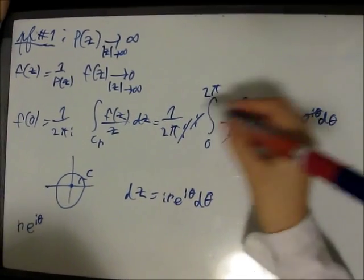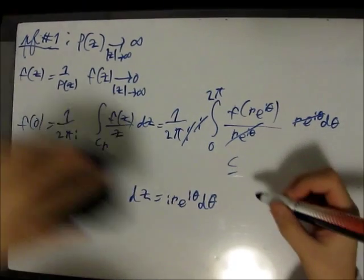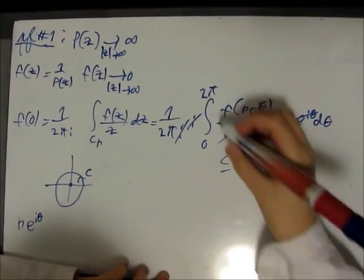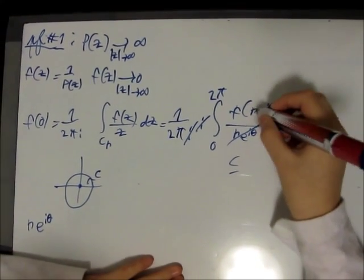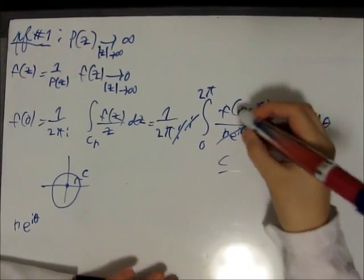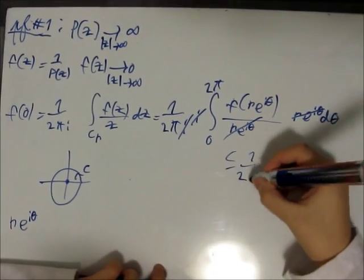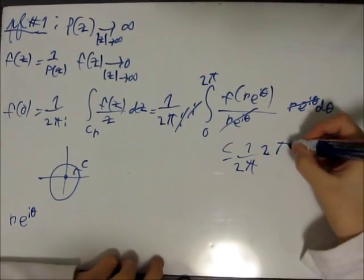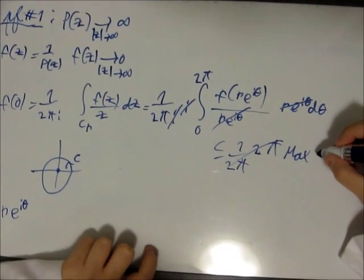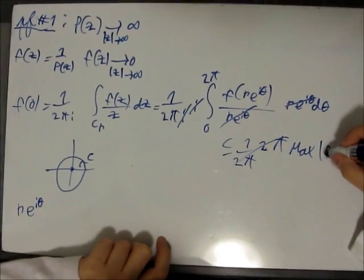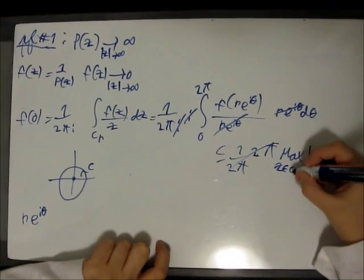We can bound this integral by 2 pi times the maximum of the modulus of F of R times e to the I theta. 1 over 2 pi times 2 pi immediately cancel, times the maximum of the modulus of F of Z, where Z is in C sub R.